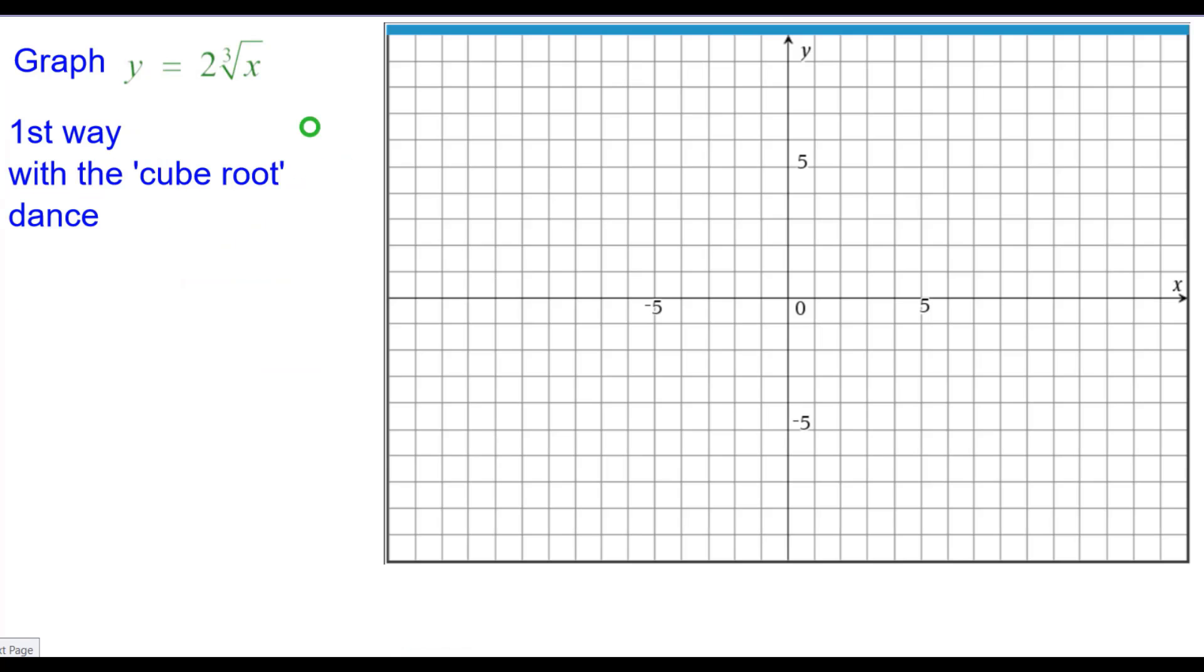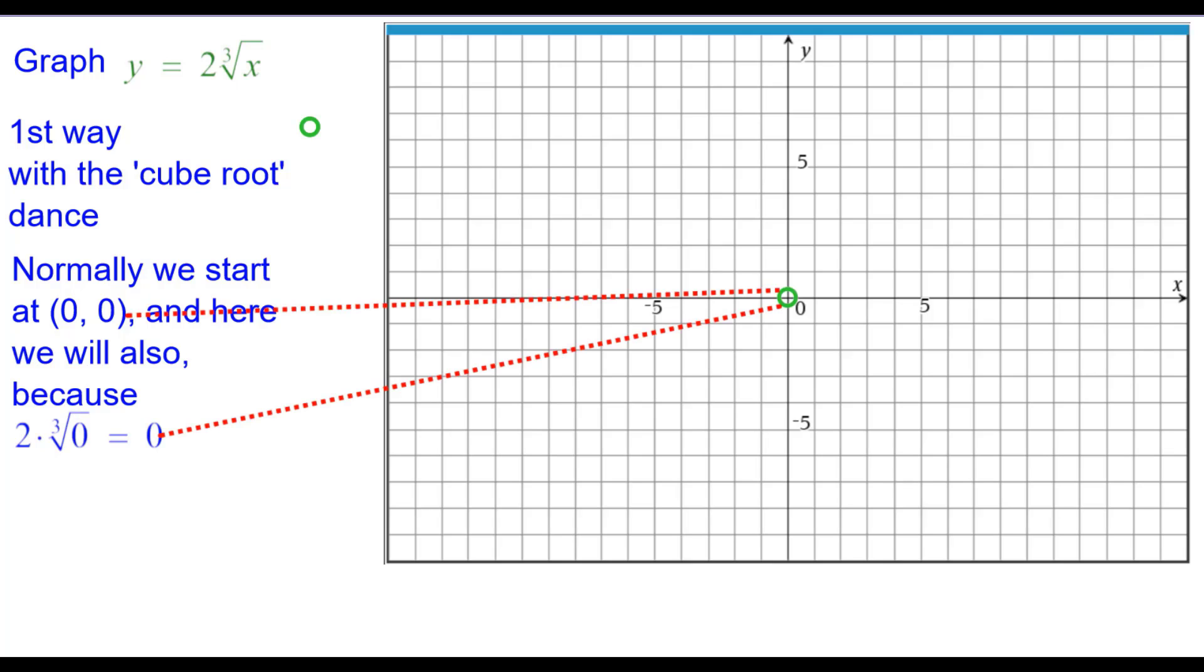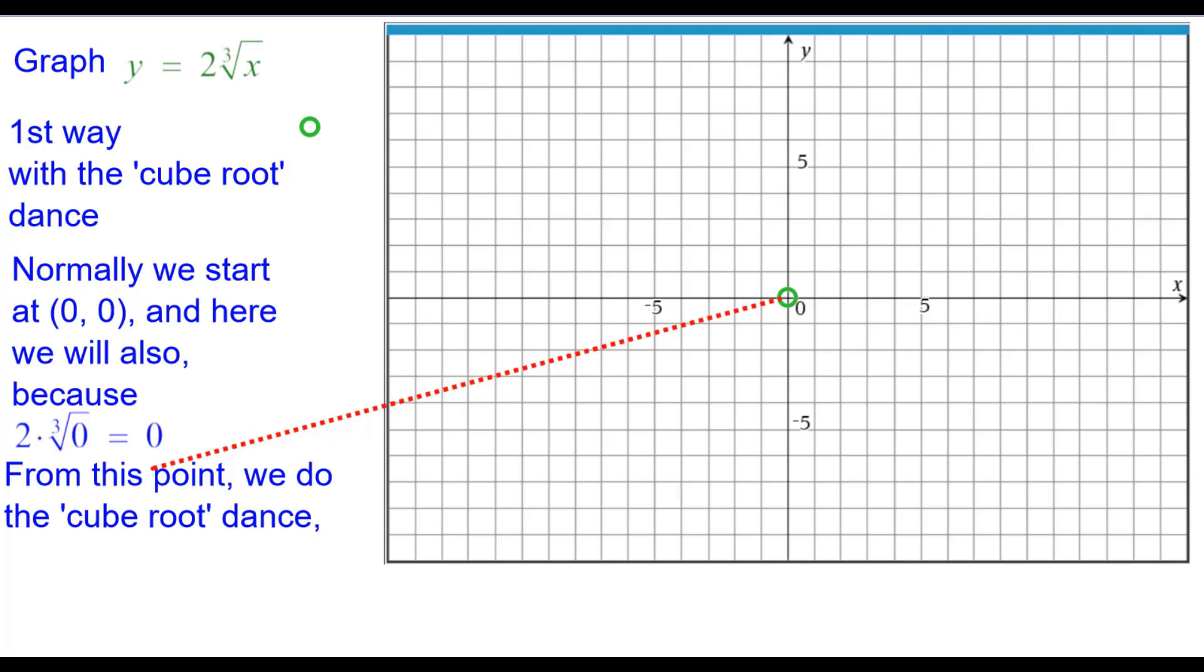The first way is with the cube root dance. Normally we start at the origin, and here we will do so also because 2 times the cube root of 0 is 0. We'll plot the origin.